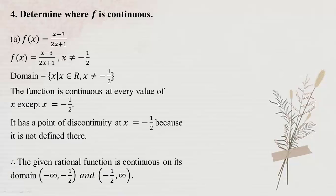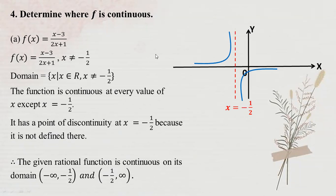The given rational function is continuous on its domain: from minus infinity to minus one by two, and from minus one by two to infinity. The continuous state of minus 1 minus 2 is equal to minus 1 minus 2.